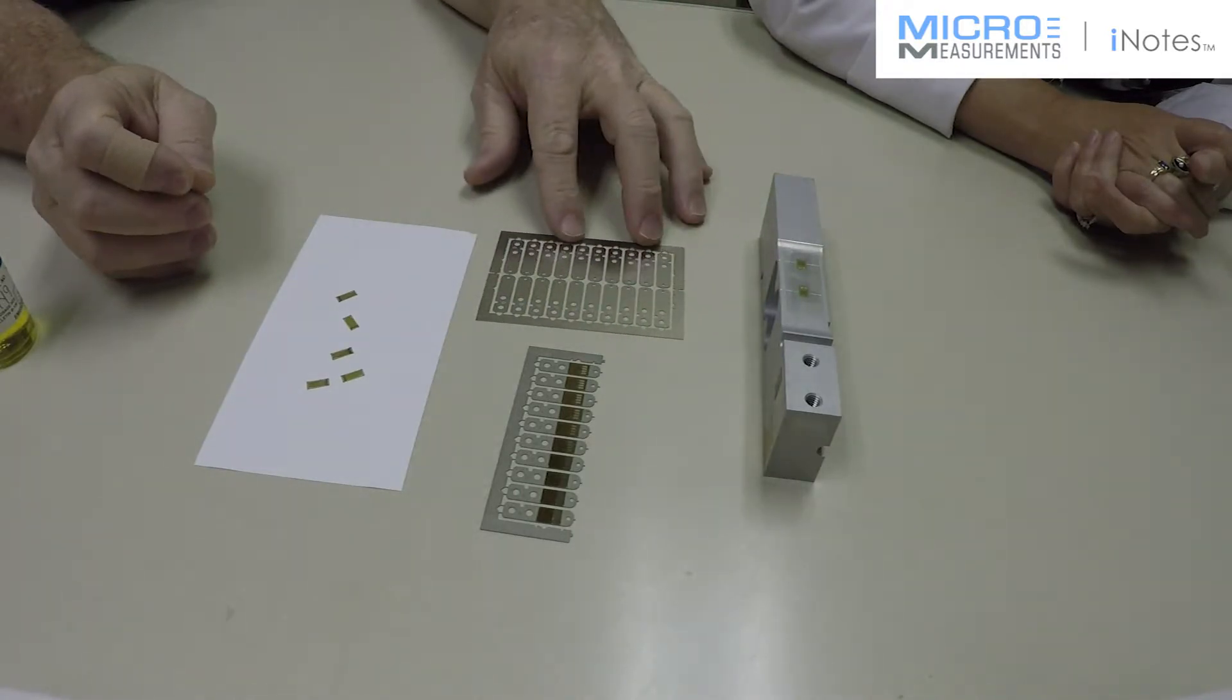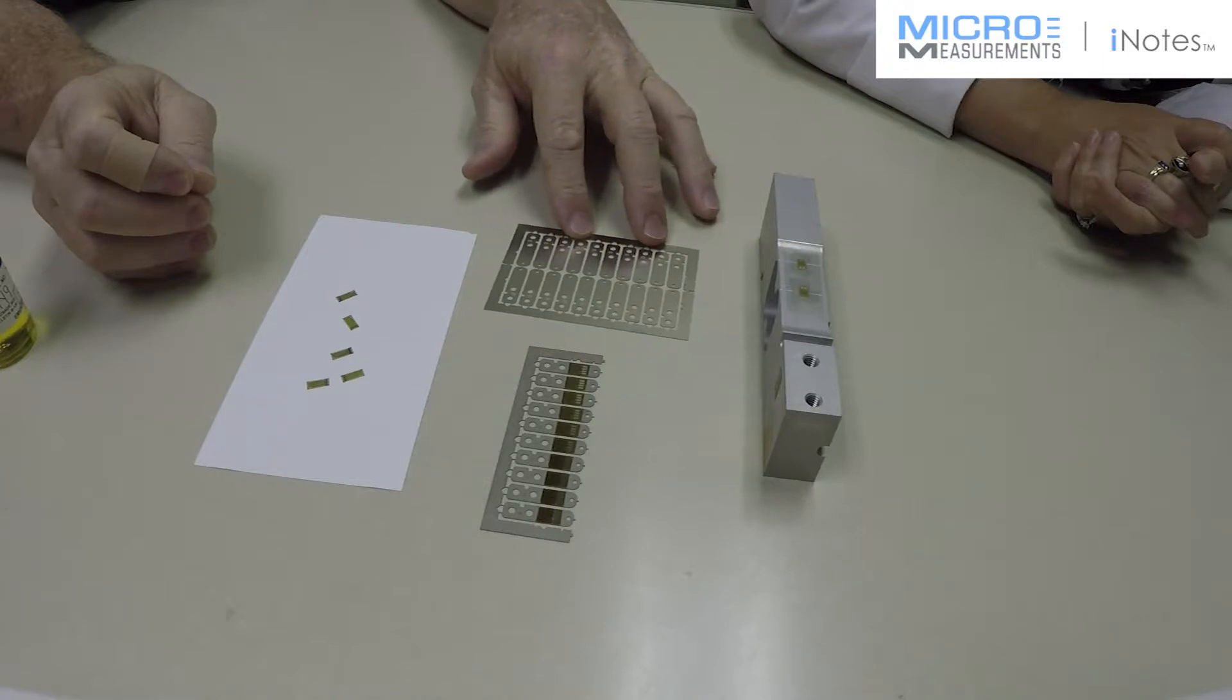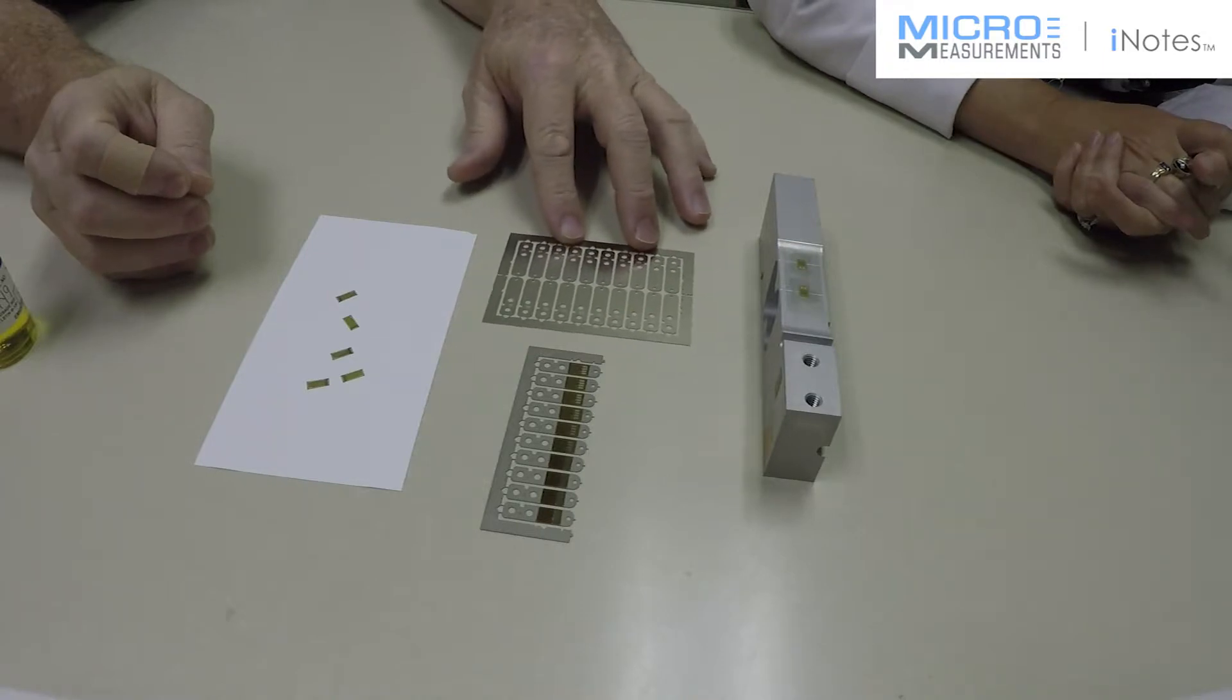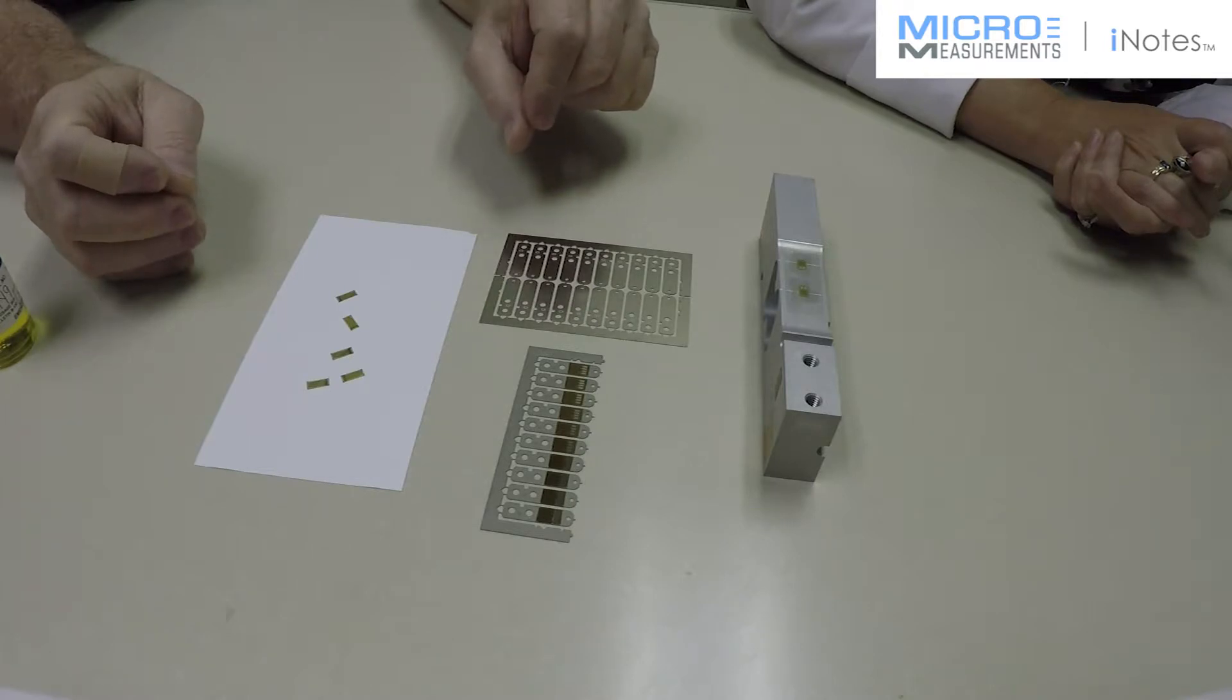and can then be placed onto the spring element. If the spring element's very thin, like these hybrid sensors, you can just tack it with a soldering iron in place, clamp it and cure it.